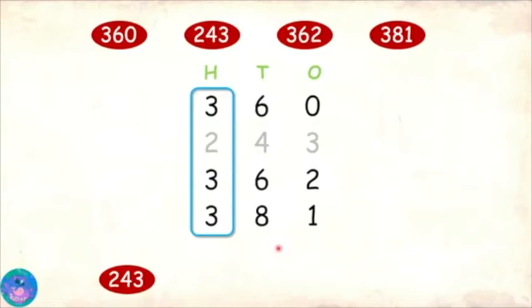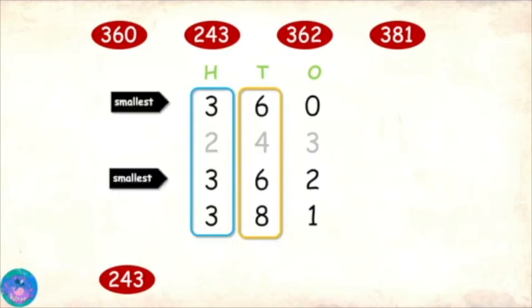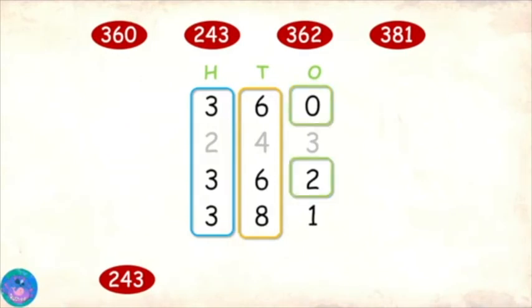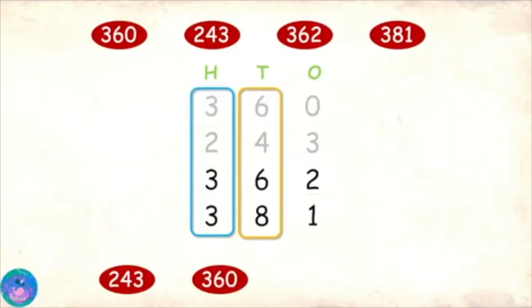All have three in hundreds place. So all of them are smallest. So we will compare their tens digits. 6 is smaller than 8, but there are two numbers having 6. So we will compare their ones digits. 0 is smaller than 2. So 360 is smallest. And I'll write it down.